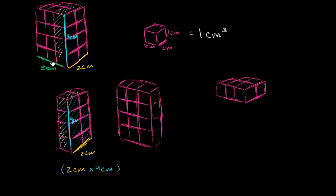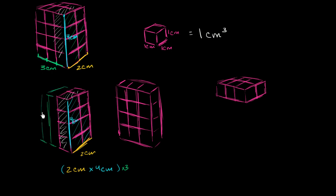To find the number of cubes in the whole figure, we multiply by the number of slices. We need 1, 2, 3 slices, since this figure is 3 centimeters deep. So we multiply by 3. We took the area of this front surface and multiplied it by the depth — that gives us the total number of cubes. So 2 centimeters times 4 centimeters times 3 centimeters gives us our volume: 2 times 4 is 8, times 3 is 24 cubic centimeters.